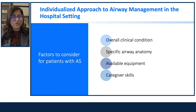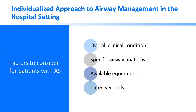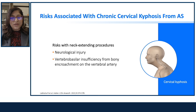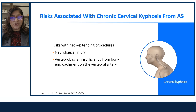Key considerations for airway management in the hospital setting include the overall clinical condition, specific airway anatomy, available equipment, and caregiver skills. Chronic cervical kyphosis from AS poses significant risks. Neck extension procedures carry a very high risk of neurological injury. Vertebral basilar insufficiency from bony encroachment on the vertebral artery can occur. Severe or acute neck extension can be extremely dangerous in these patients.